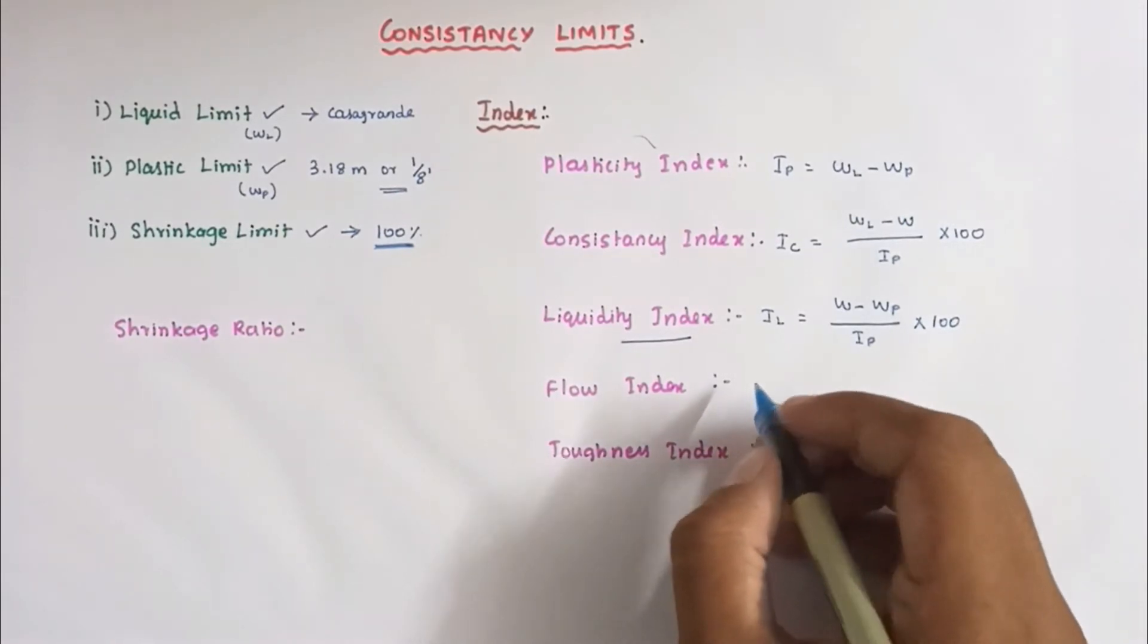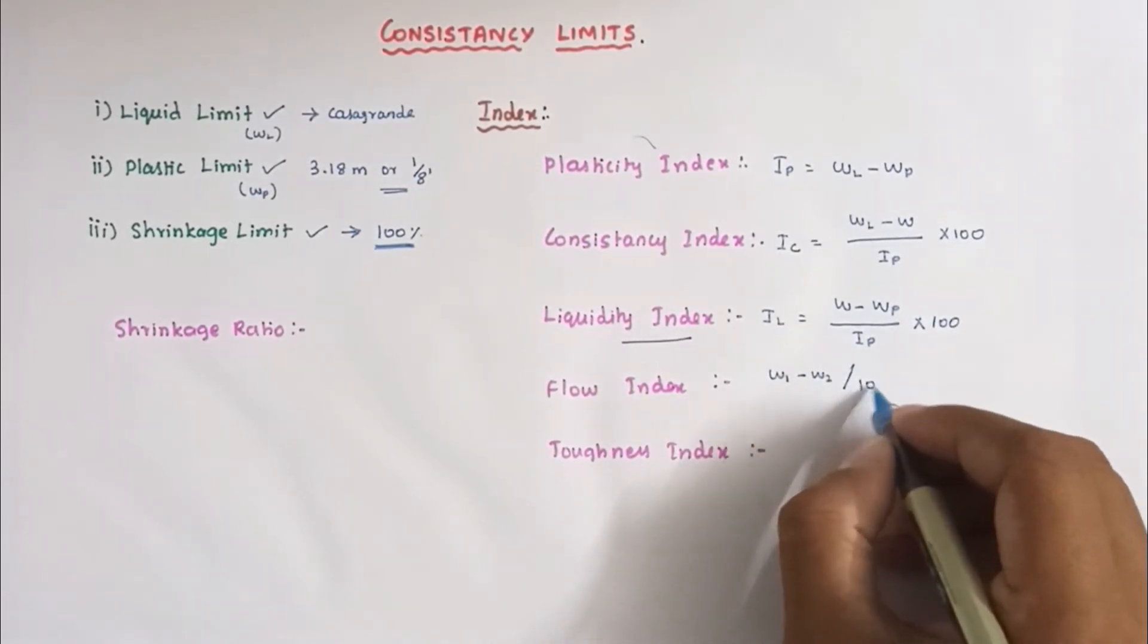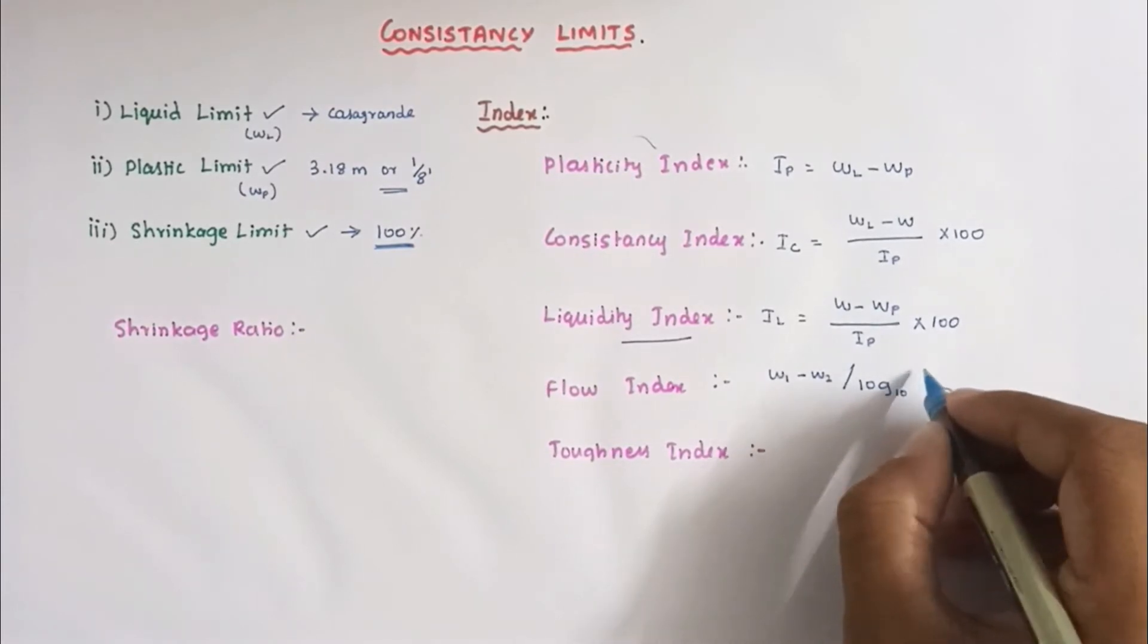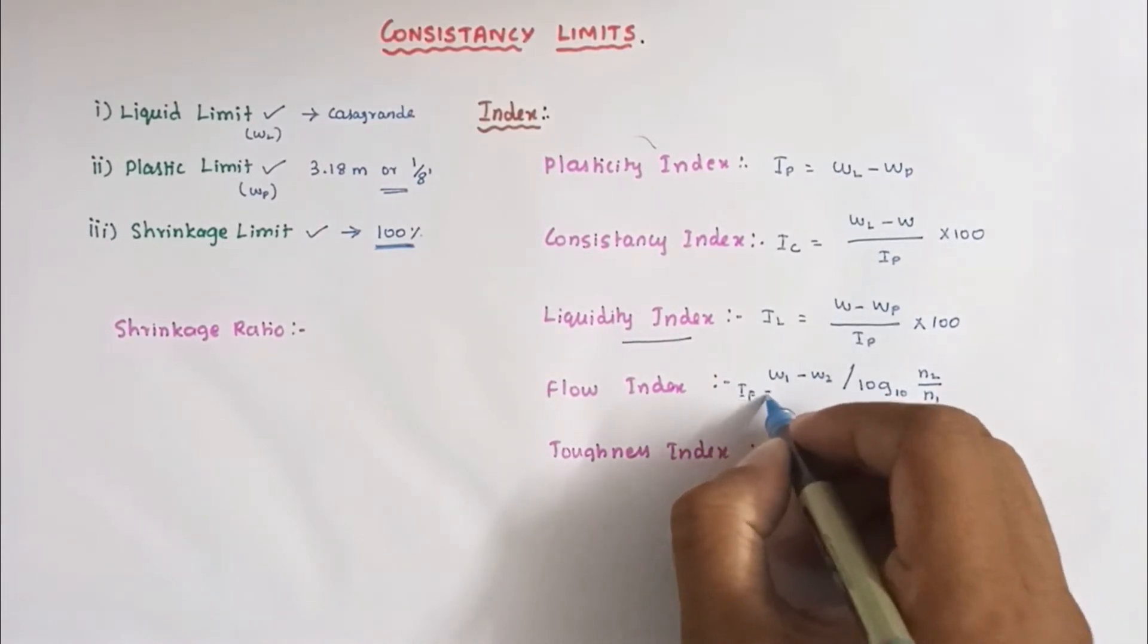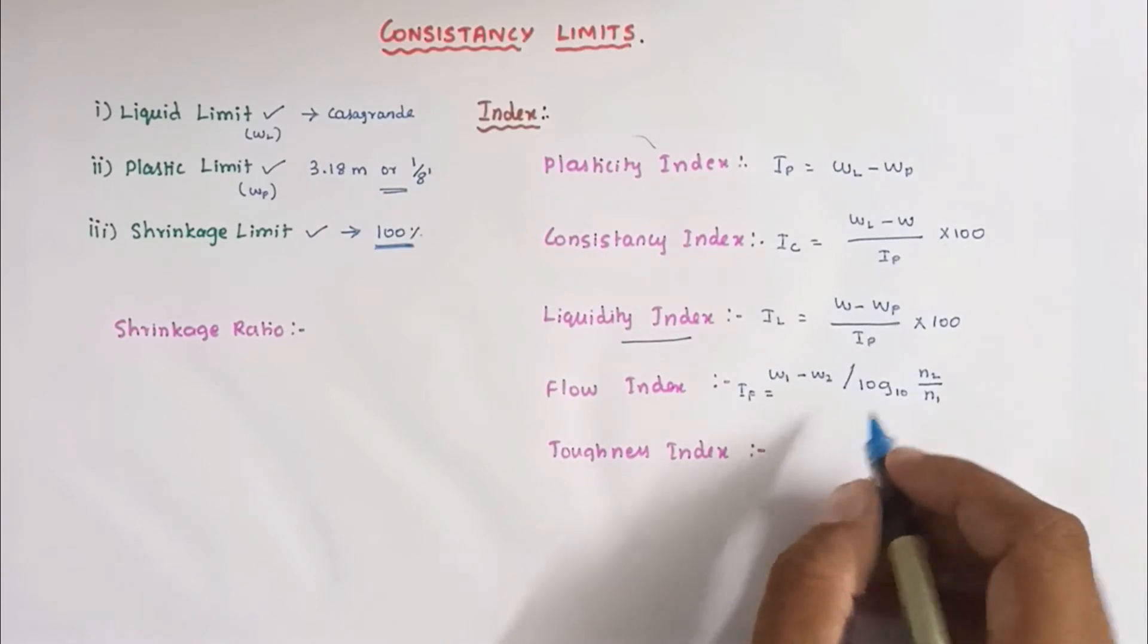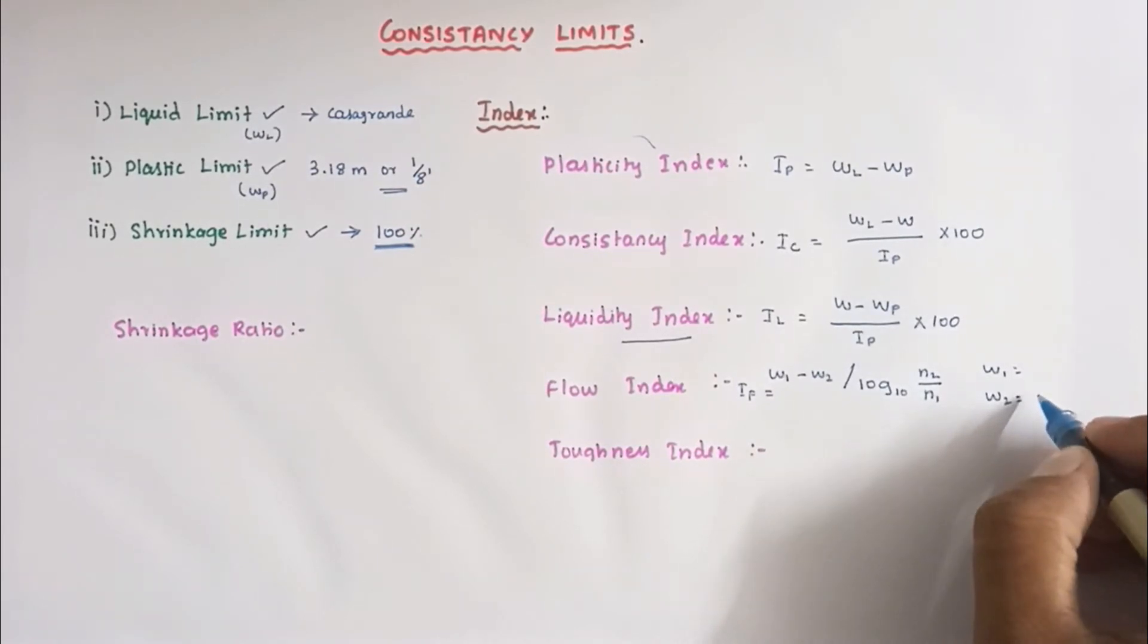Then flow index. Flow index we can calculate from W1 minus W2 divided by log 10 N2 divided by N1. This is flow index IF. Where W1 equals water content corresponding to N1 blows and W2 equals water content corresponding to N2 blows. N1 and N2 are calculated from Casagrande apparatus, the liquid limit apparatus.